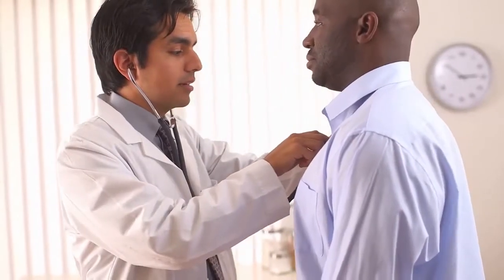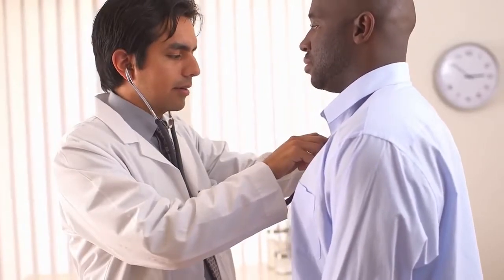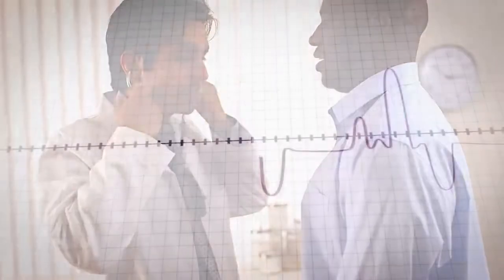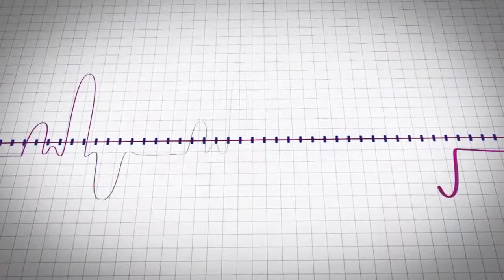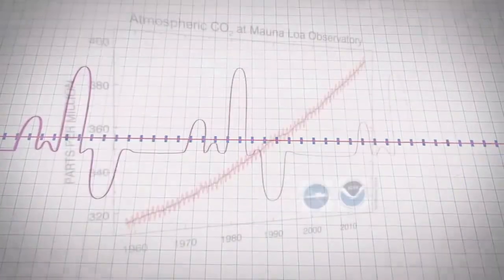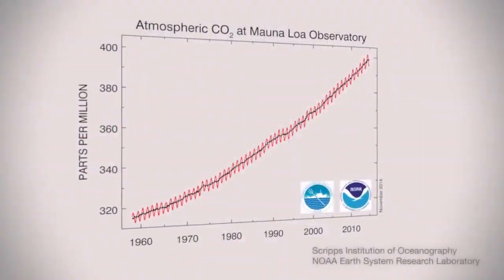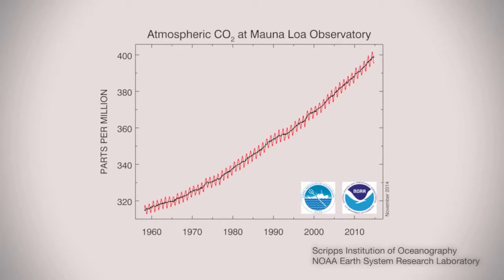Just as a physician might take your temperature, heart rate, or respiration rate as an indicator of the health of your body — a human system — environmental scientists use measures such as carbon dioxide concentration in the atmosphere as an indicator of the health of the natural environment.